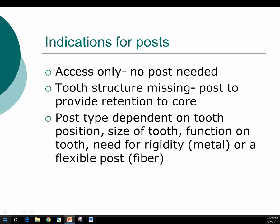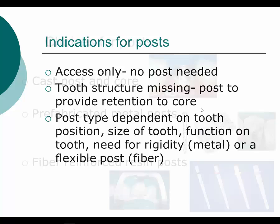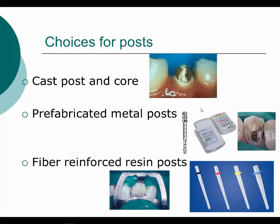When we look at indications for a post: if we do an access only for endodontic treatment, we don't need a post at all, just a restoration of that access opening. For anterior teeth with only a single Class III restoration, an adhesive composite is all we need. When there's significant tooth structure missing, we need to consider a post to retain the core. The post type we use depends on tooth position, size, function, and the need for rigidity — whether a metal post or a flexible fiber post. We also don't want to over-instrument the canal; choose a post diameter suitable to the tooth without removing additional dentin.